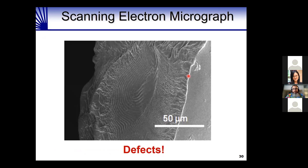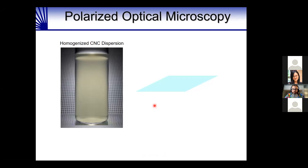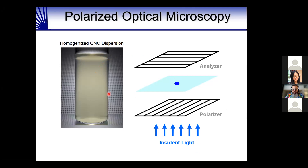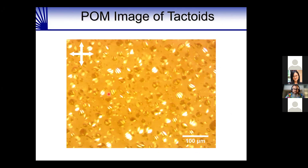One of the applications we're interested in is optical materials, but a big problem with these silicas is that they are full of defects — arising from the liquid crystal templating approach. Shown here is a hydrogel with a fingerprint defect — a pretty typical point defect. We wanted a better understanding of how cellulose nanocrystals form this liquid crystal template in order to improve film quality. Shown here is a homogenized cellulose nanocrystal dispersion at about four weight percent.